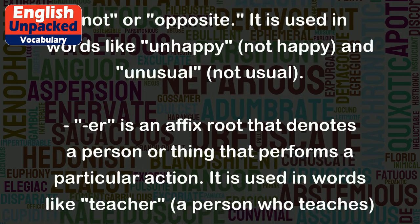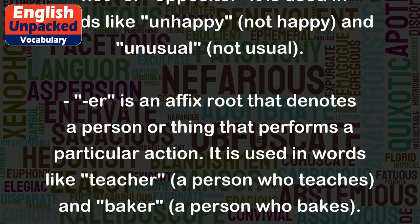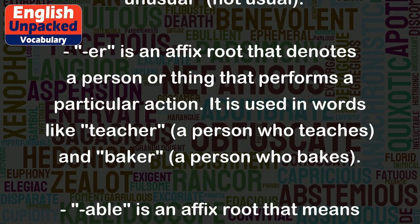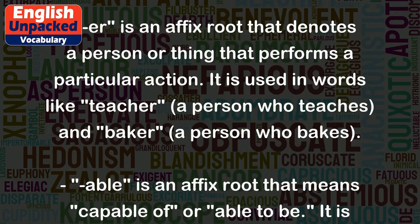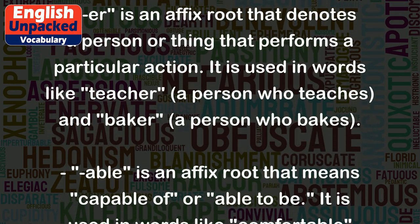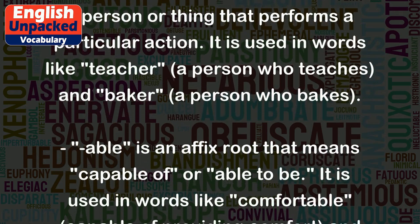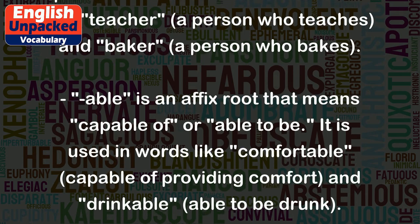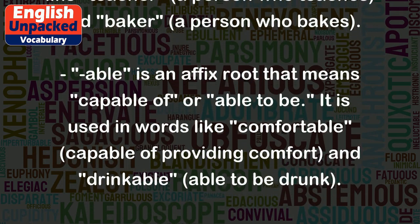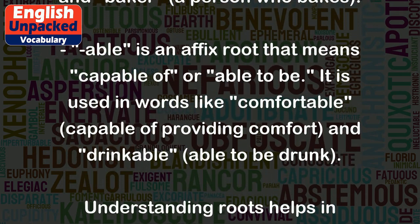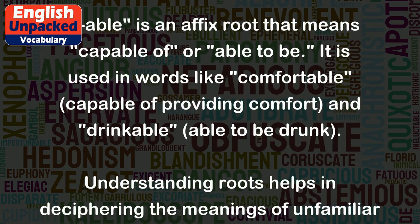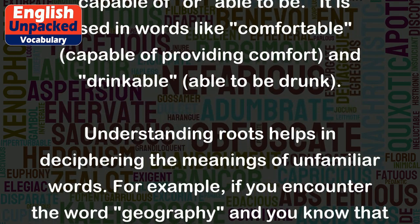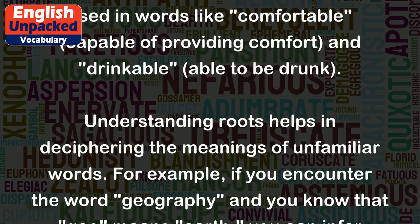'-Er' is an affix root that denotes a person or thing that performs a particular action. It is used in words like 'teacher,' a person who teaches, and 'baker,' a person who bakes. 'Able' is an affix root that means 'capable of' or 'able to be.' It is used in words like 'comfortable,' capable of providing comfort, and 'drinkable,' able to be drunk.